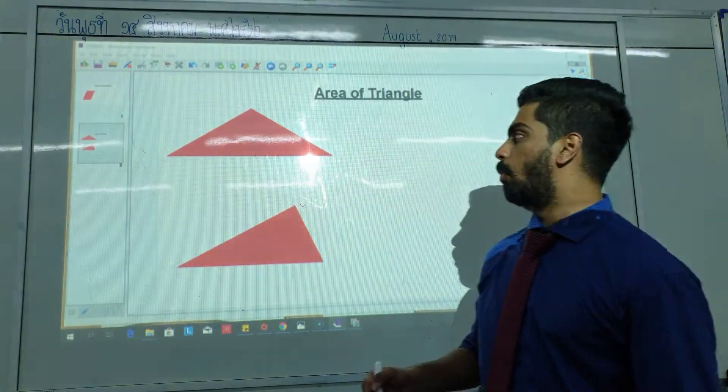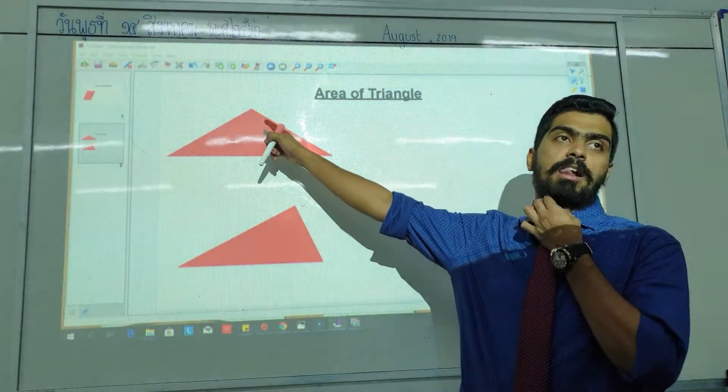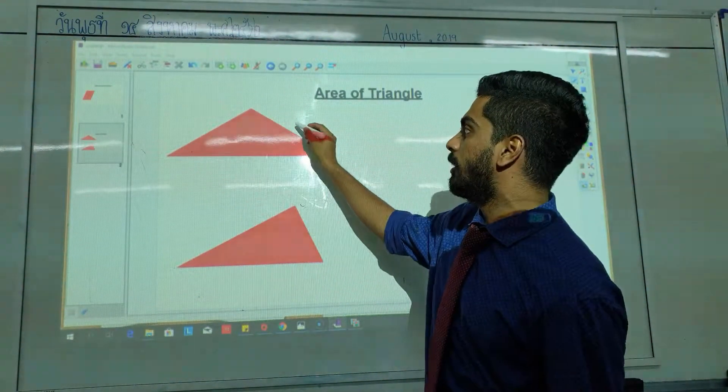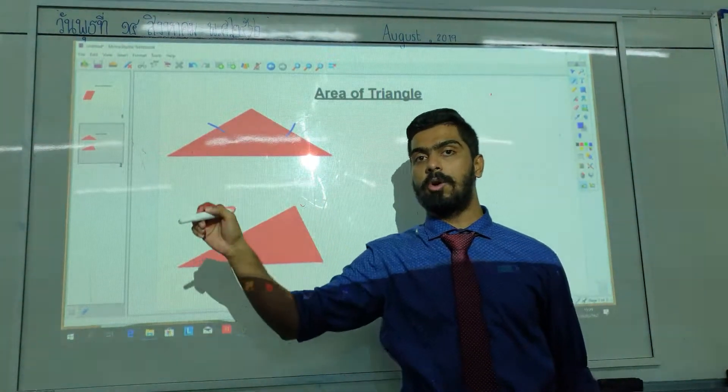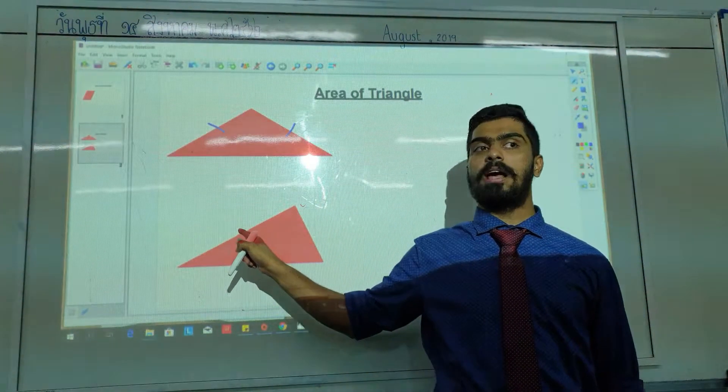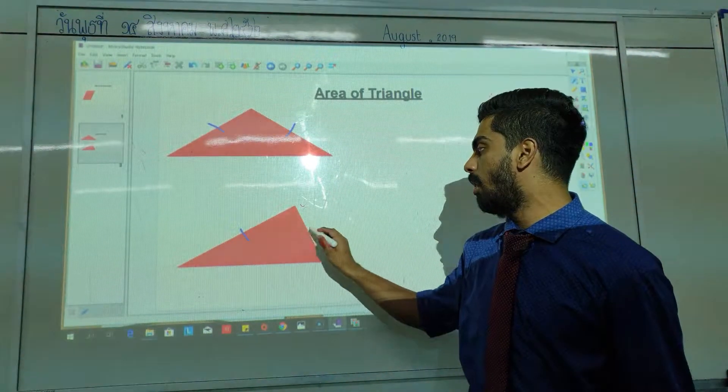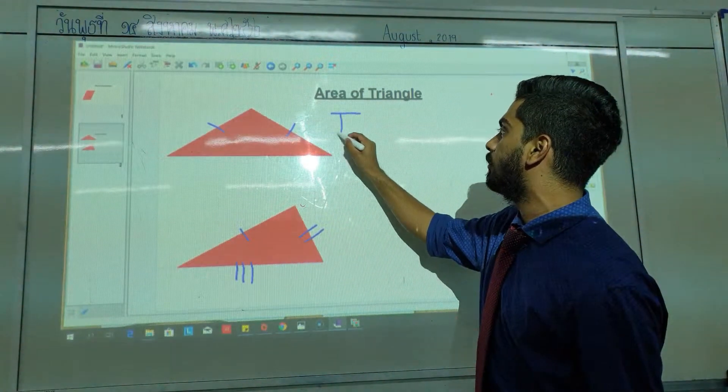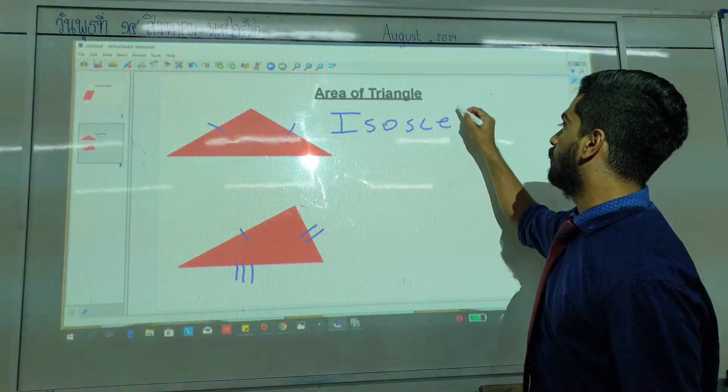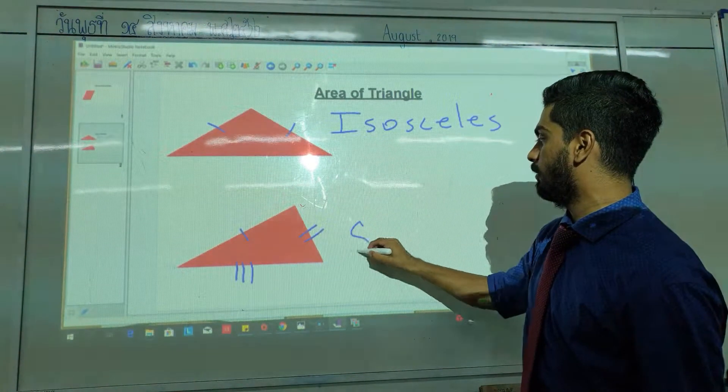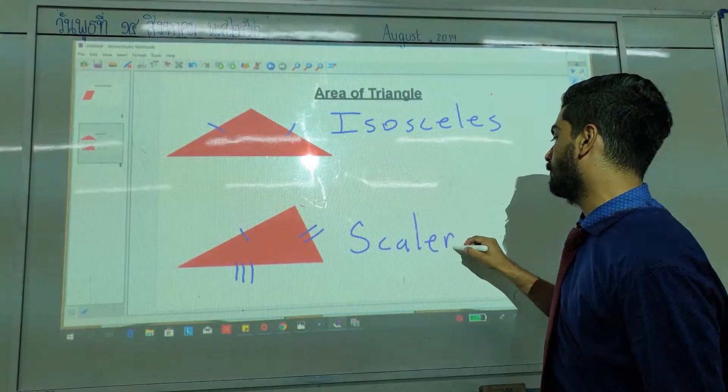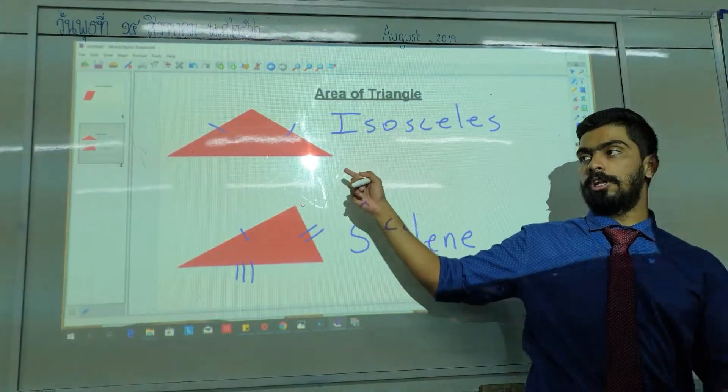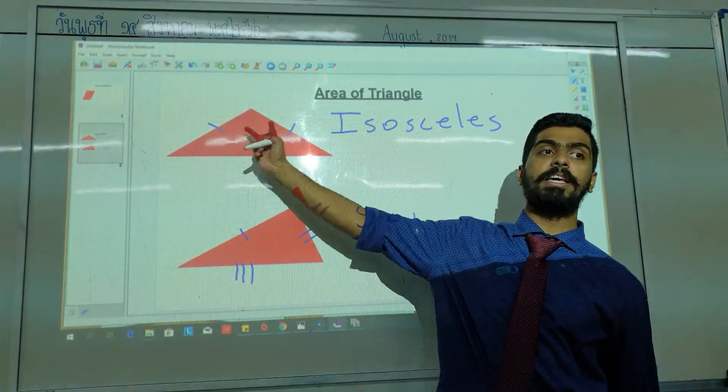Alright guys, one more example. One of the students asked me, what kind of triangle is this? This is an isosceles triangle. Isosceles means when two sides are equal. This is a scalene triangle. Scalene means when all the sides are different. So in a scalene, all sides are different. In an isosceles triangle, two sides will be equal.